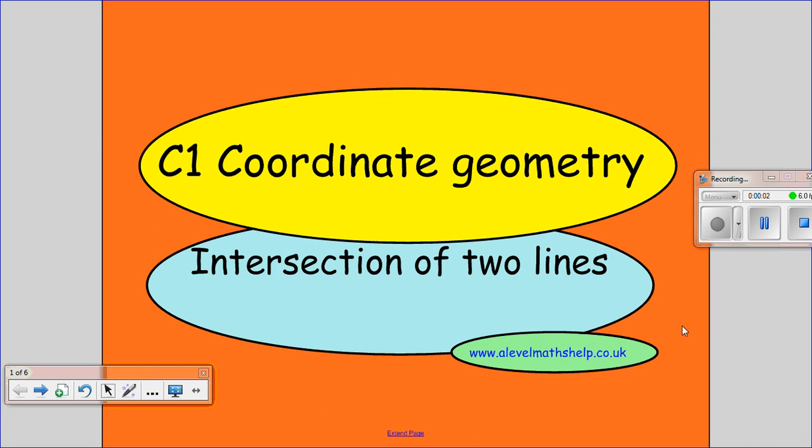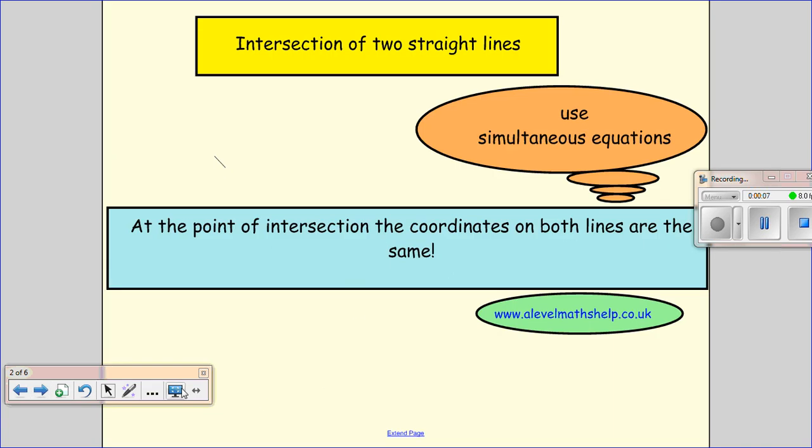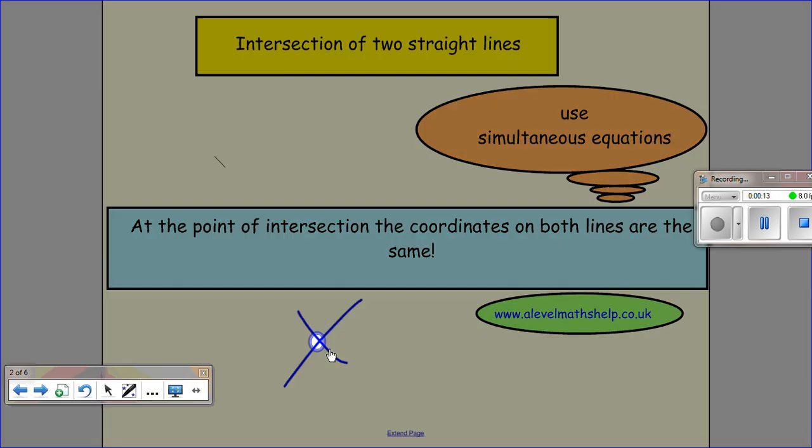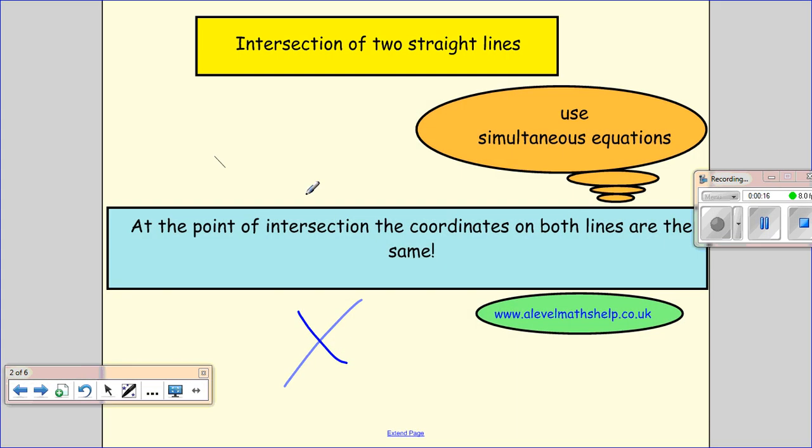Hi, I hope everybody's well. Today in this video we're going to be looking at the intersection of two lines. We're looking at when two lines cross, and the point of intersection will be such that the x and y coordinates on both lines are the same. We find this point by using simultaneous equations where we're trying to put the two equations of the lines together.